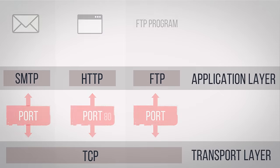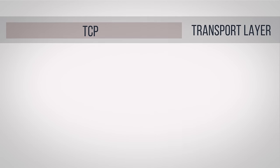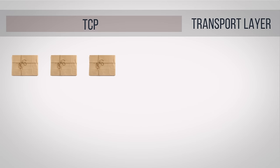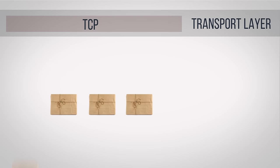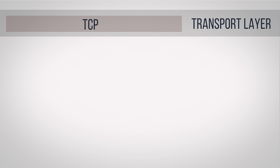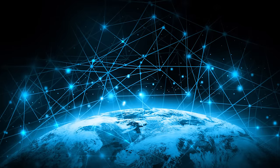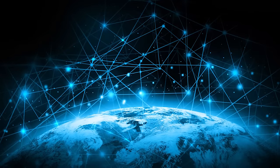Once TCP gets the data, it chops it up into small chunks called packets, so that they can individually take the quickest route over the internet to get wherever it is they're going.